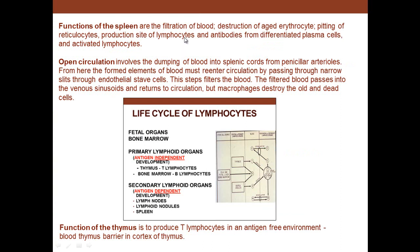The functions of the spleen include filtration of the blood, destruction of aged erythrocytes, pitting of reticulocytes to remove ribosomes, and production of lymphocytes and antibodies. It also supports differentiation of lymphocytes into plasma cells and activation of lymphocytes. The spleen has both open and closed circulation — whole blood is dumped into the Billroth strands and must migrate through to re-enter the circulation.